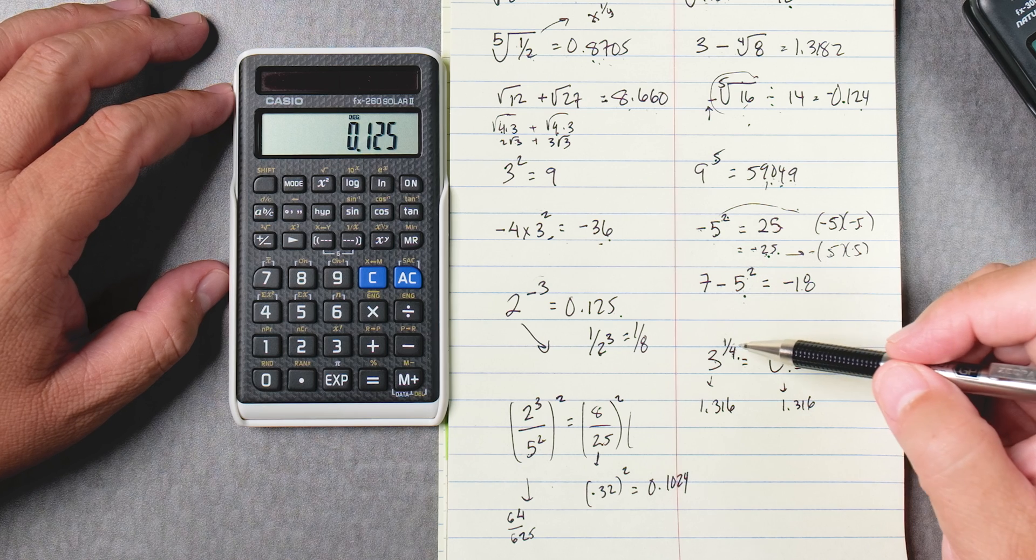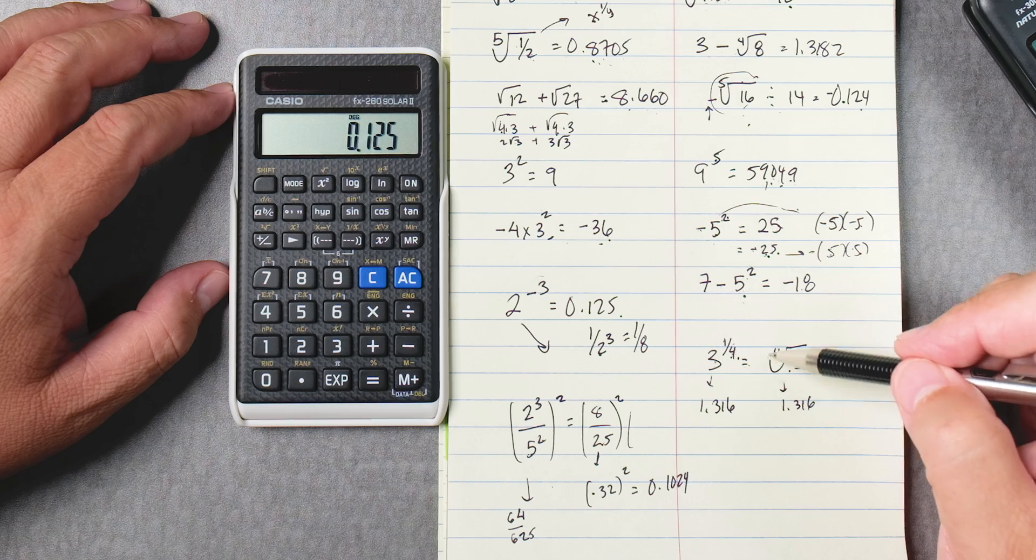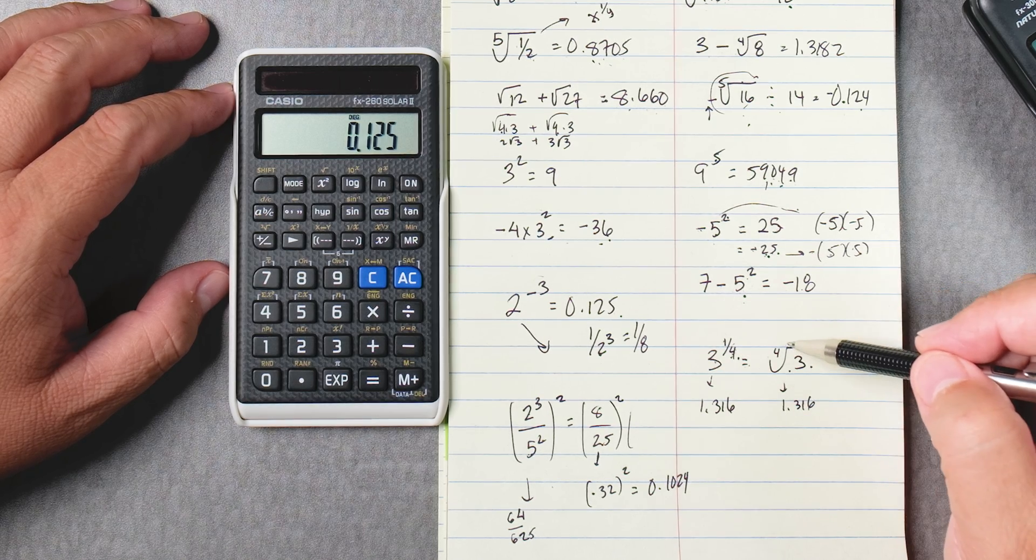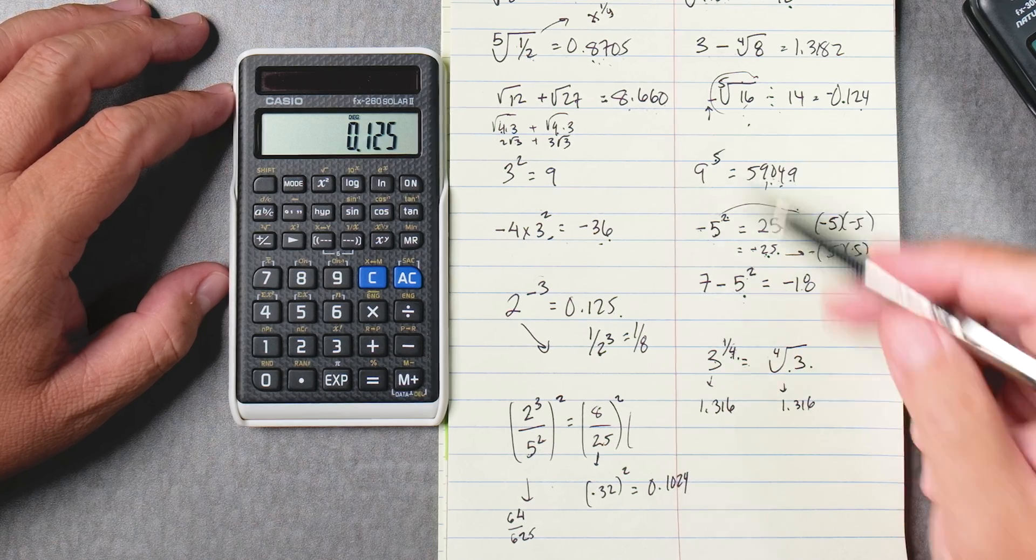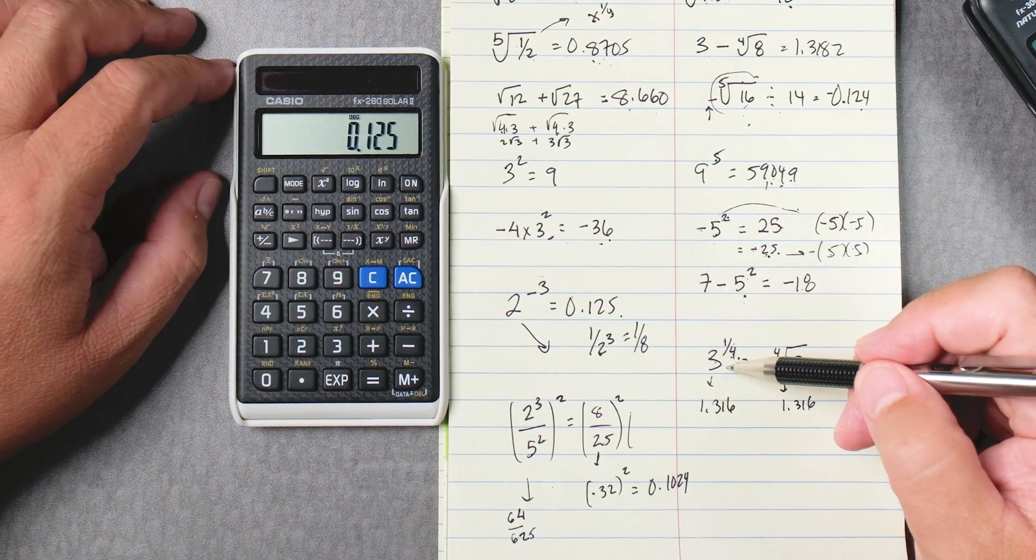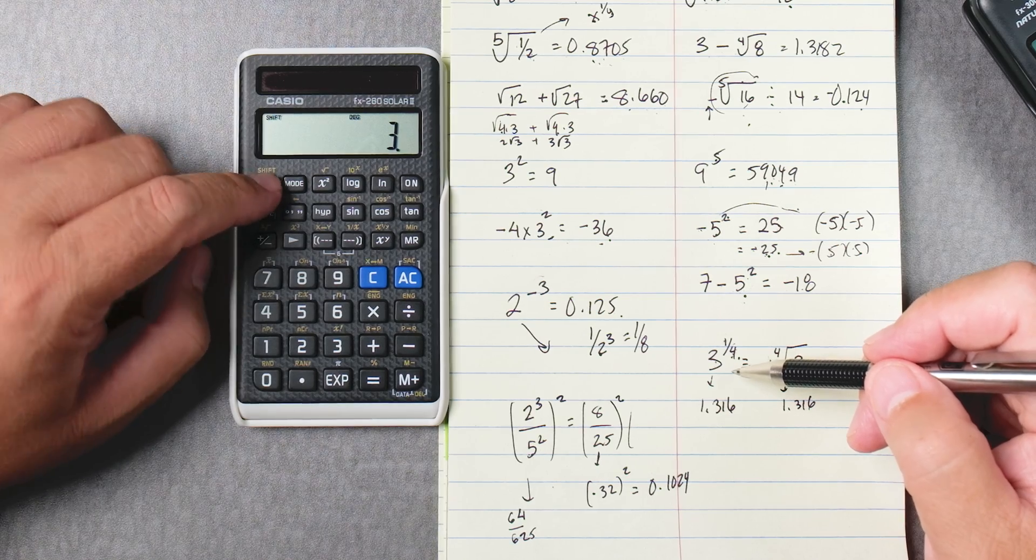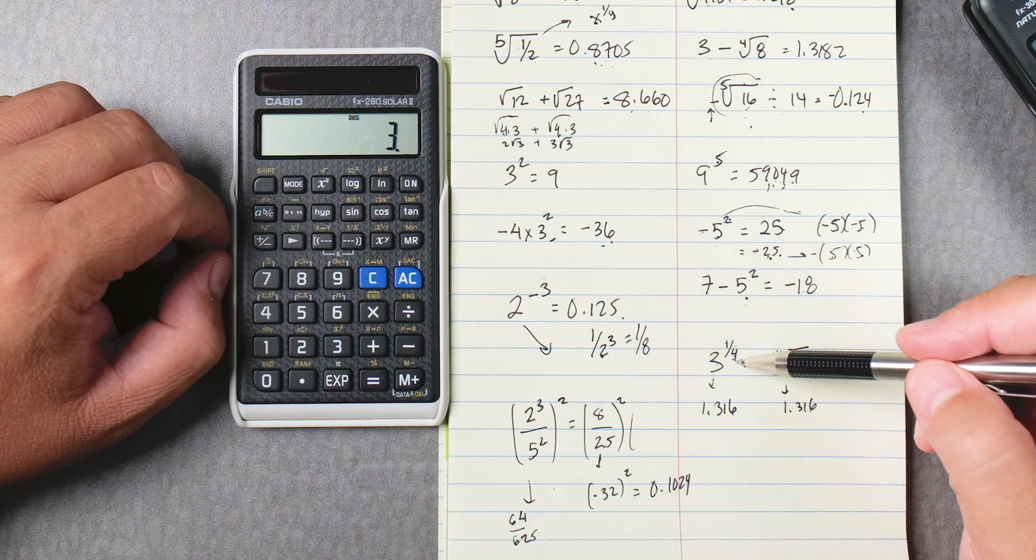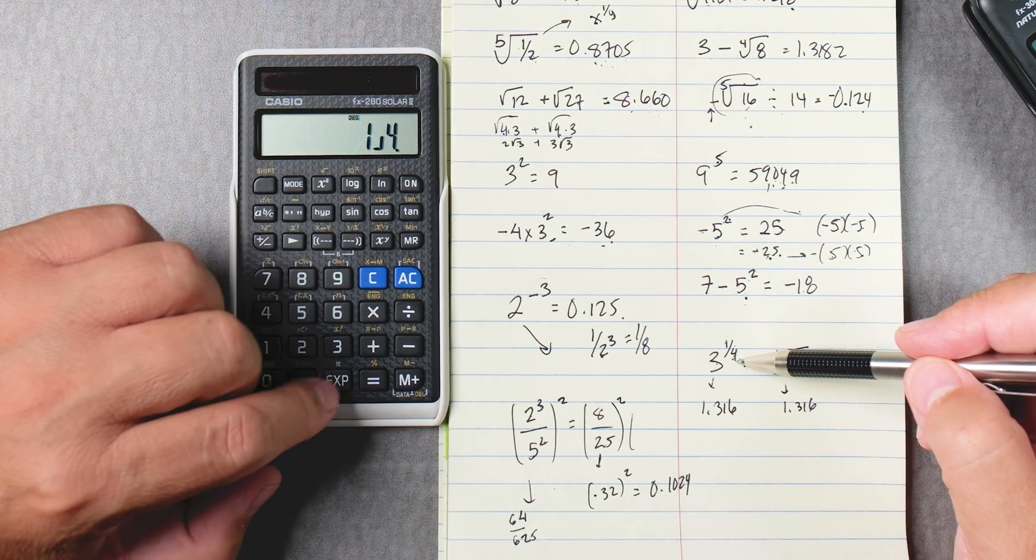All right so let's do three to the one-fourth, which is equivalent to the fourth root of three. These are equivalent. This is a power, this is a root, and these two are equivalent and thus you study these two together. So for this one we say three right and then we say shift x to the y so we can get that x to the one over y and then we can say one abc four equals.